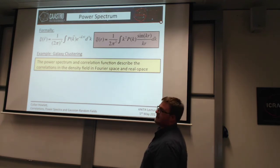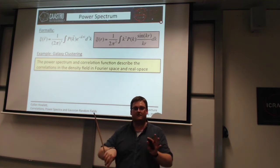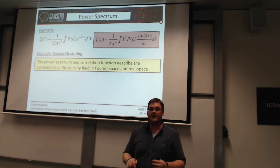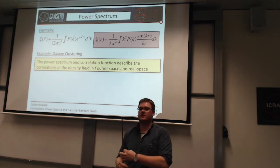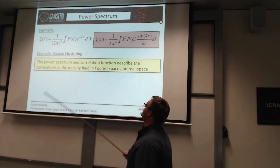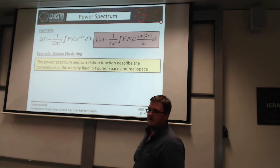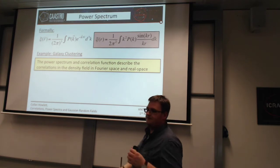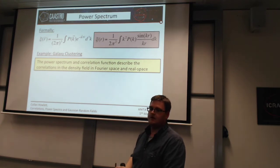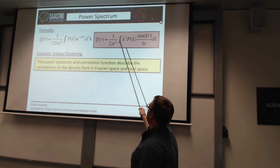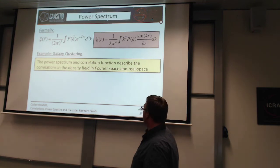In galaxy clustering, we've been measuring both for years. The reason is that in any real application, you don't have an infinite volume — not in real space or Fourier space. So this integral doesn't go from minus infinity to infinity as it should in theory. These two things will have different information because they are looking at different scales, because you've truncated the integral.